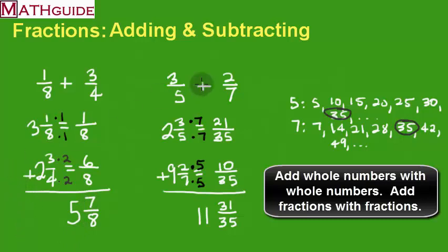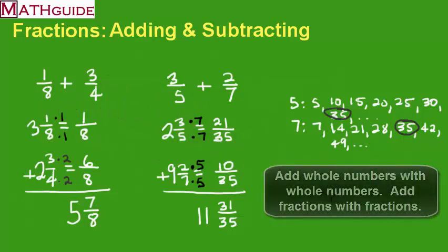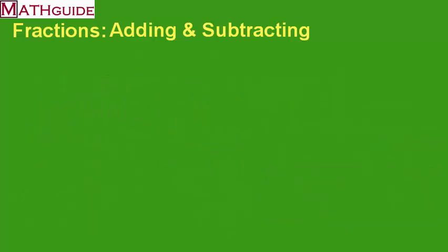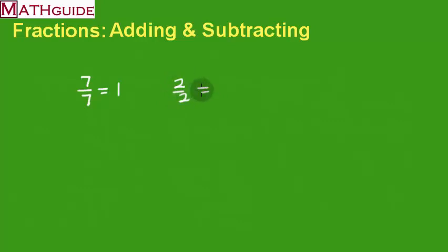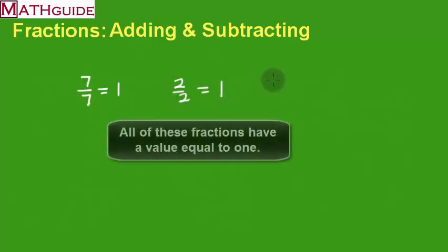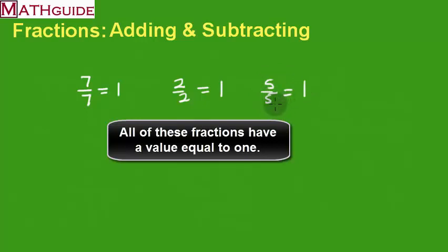Now one thing we didn't talk about is how to do subtraction, so I'm going to do a problem with subtraction. Before we start, there is something I want to elaborate on. I have to keep in mind that if I ever have a fraction like 7 sevenths, that's the same thing as 1. Similarly, 2 halves equals 1, and 5 fifths equals 1. So if the numerator and denominator are ever the same, that's equal to 1.